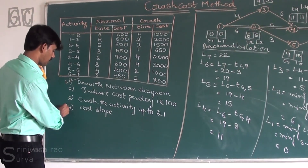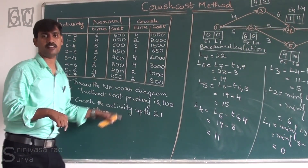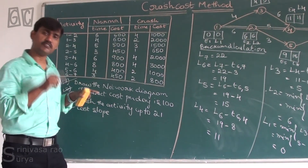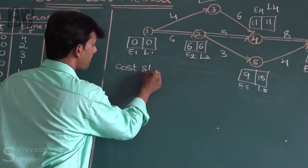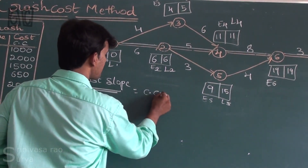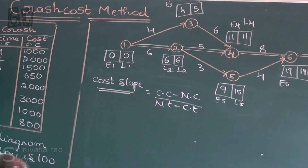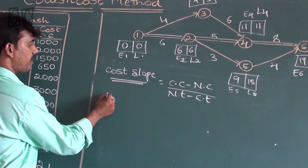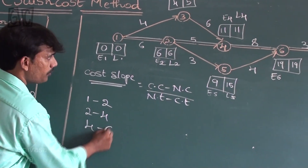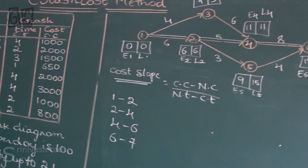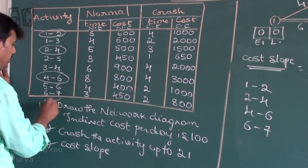Now I want to teach the cost slope. The indirect cost per day is 100 rupees. We need to crash the network up to 21 days. The cost slope formula is: (Crash Cost minus Normal Cost) divided by (Normal Time minus Crash Time). We consider only critical path activities: 1 to 2, 2 to 4, 4 to 6, and 6 to 7.